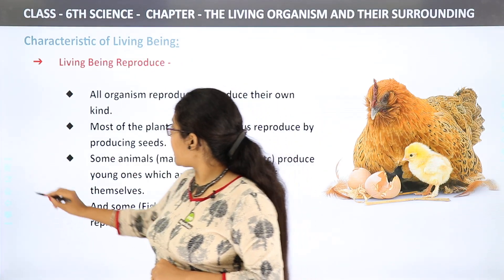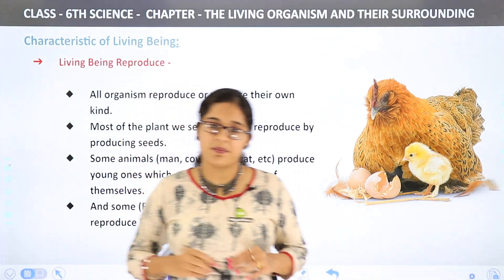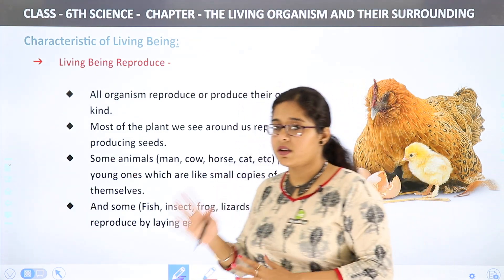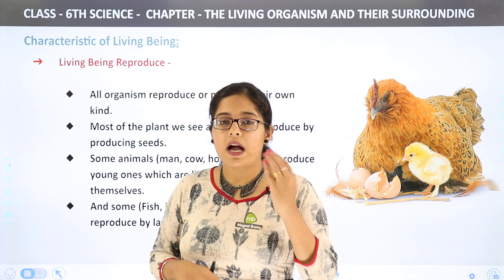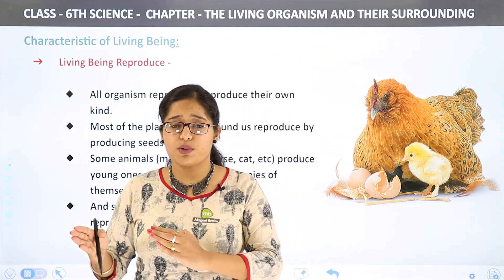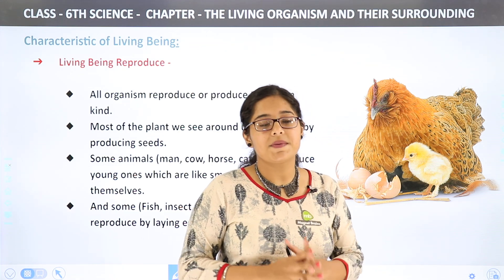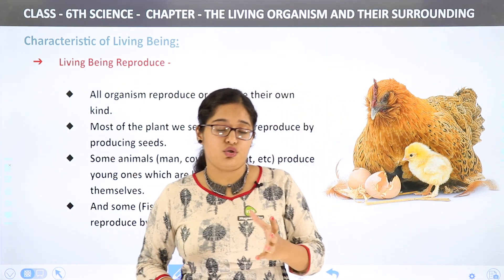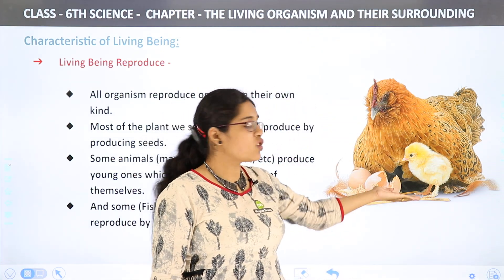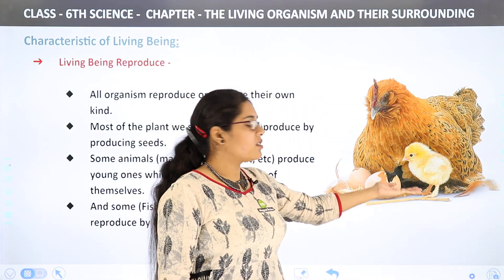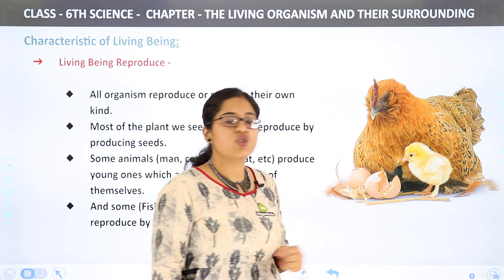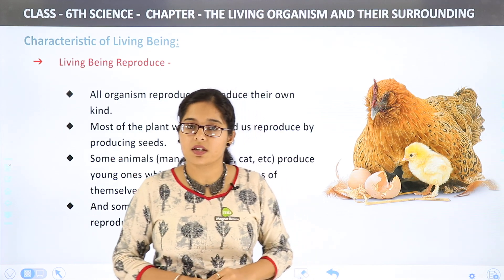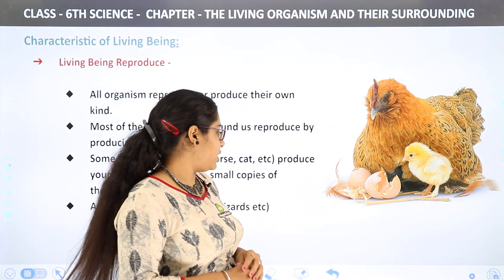Now we will proceed to the next characteristic: living beings reproduce. Reproduction is a characteristic of living things. Does your chair produce another chair? No. But a hen can produce chicks — we get chicken from the hen. So this is an example of reproduction.